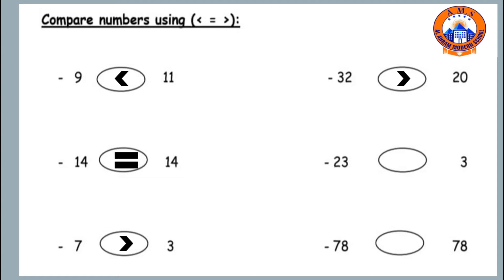Twenty-three and three. Of course, twenty-three is the bigger number, so twenty-three is bigger than or greater than three.